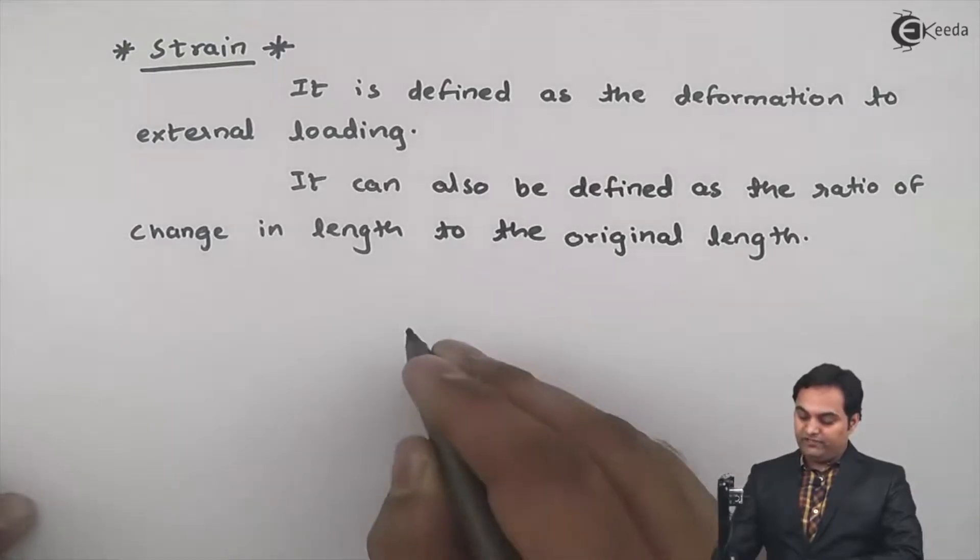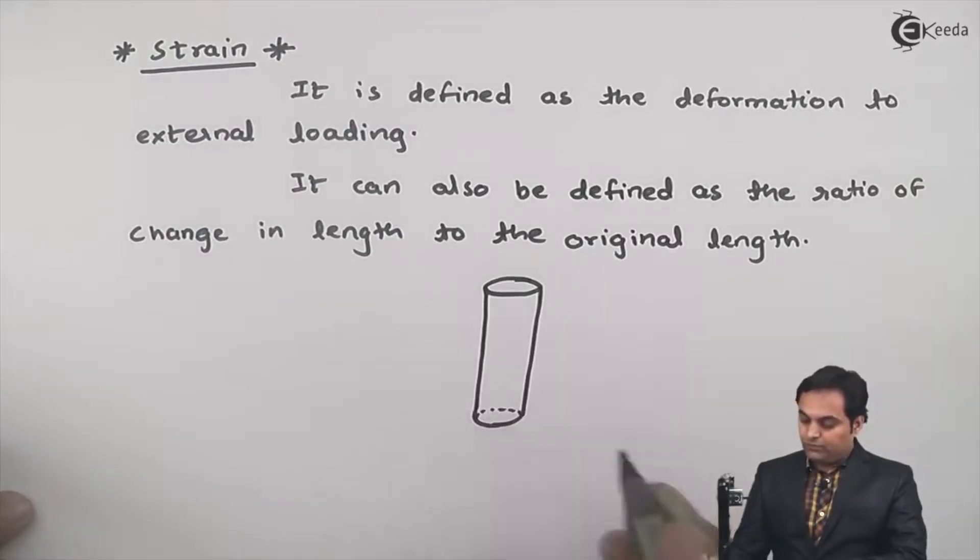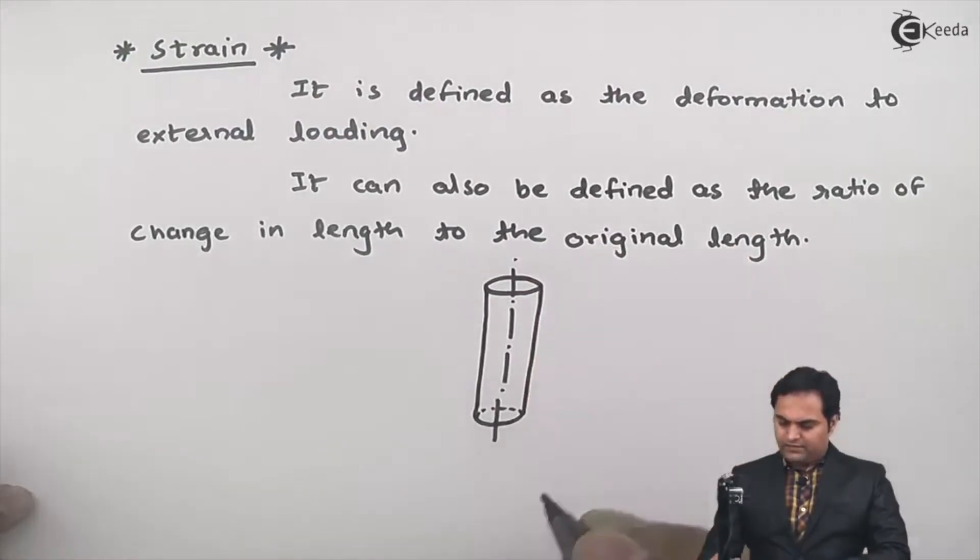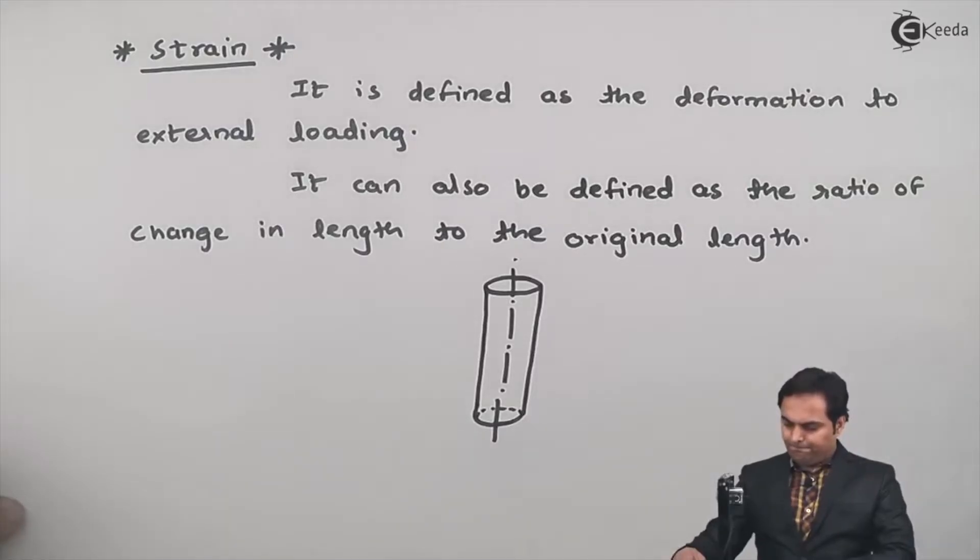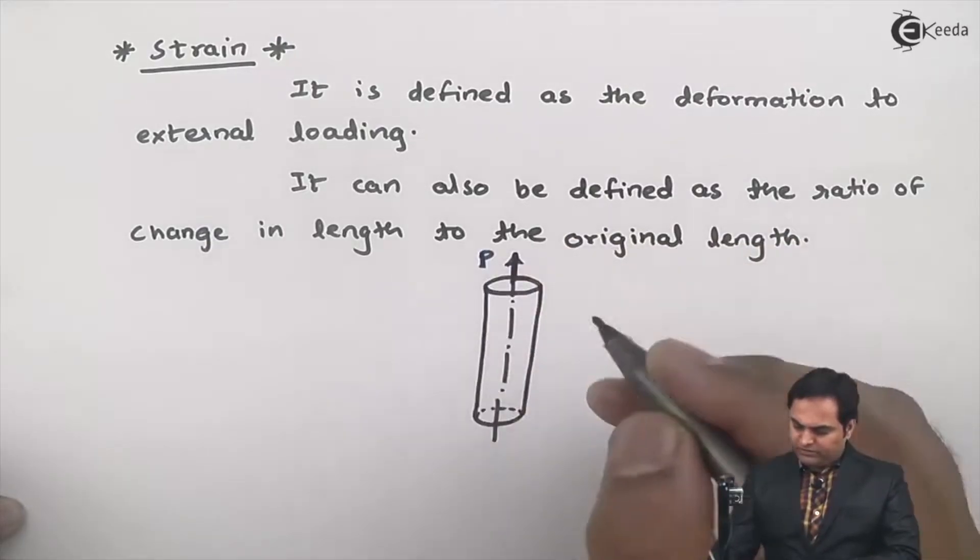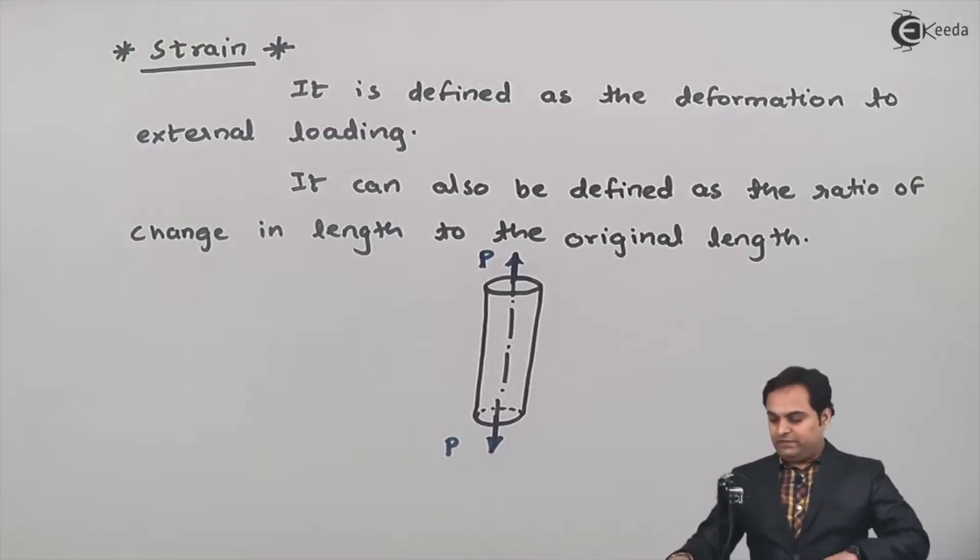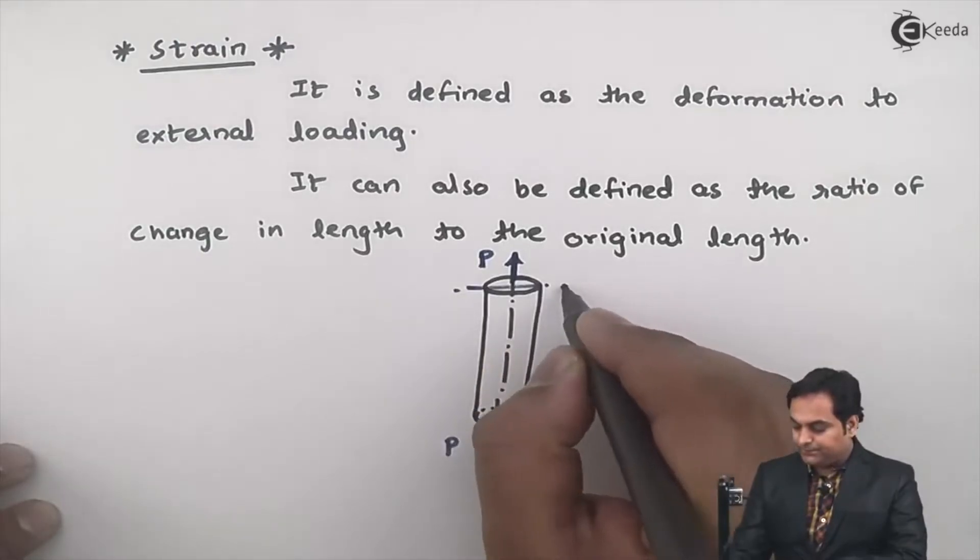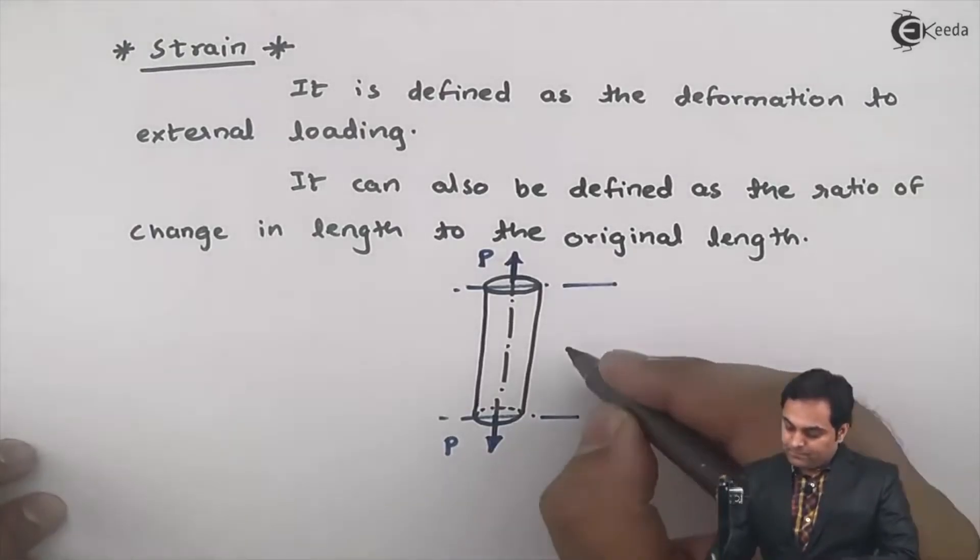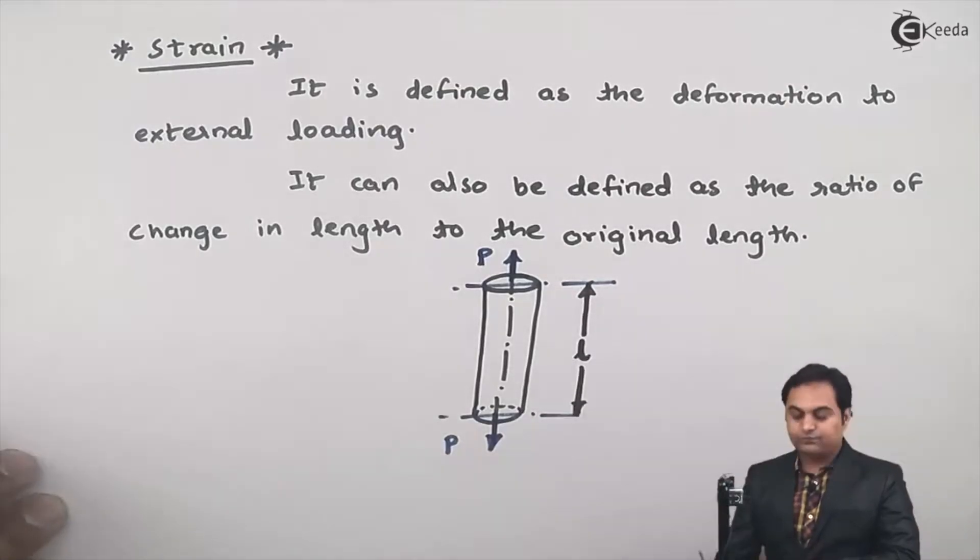I can explain this again with the help of a diagram. Suppose we have a rod here and load is applied to the rod in upward direction and in downward direction. Let me say that the length of this rod is L.